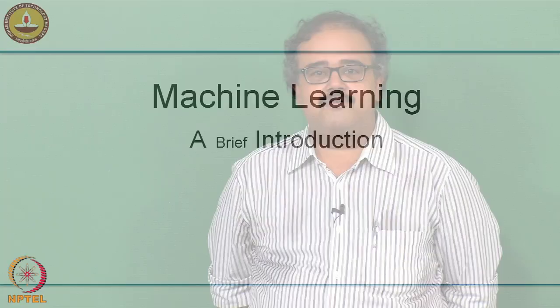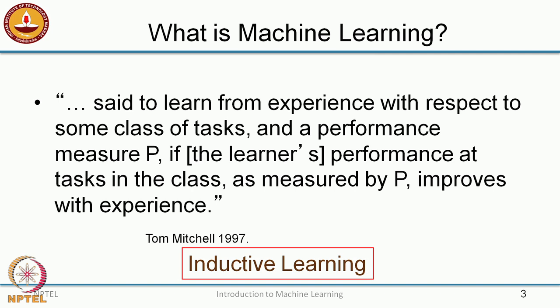So what is machine learning? I'll start with a canonical definition by Tom Mitchell from 1997. A machine or an agent — I deliberately leave the beginning undefined because you could apply this to non-machines like biological agents — is said to learn from experience with respect to some class of tasks and a performance measure P, if the learner's performance at tasks in that class as measured by P improves with experience.